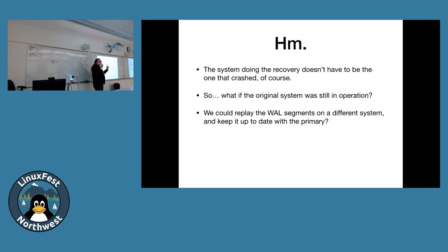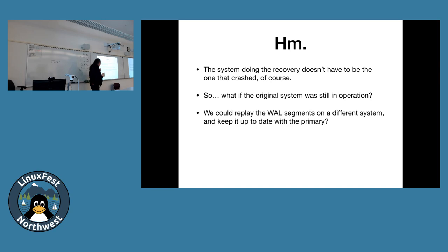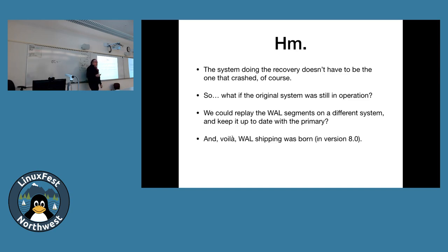We can keep the secondary up to date with the primary. Official Postgres terminology: the primary is the one generating WAL, and secondaries are the ones consuming WAL. Postgres doesn't use master and slave terminology — that was a big fight, but we don't use it. The terms are 'primary' and 'secondary.' In version 8, this idea was implemented and it's called WAL shipping, because you are literally picking up the WAL and shipping it to another system.